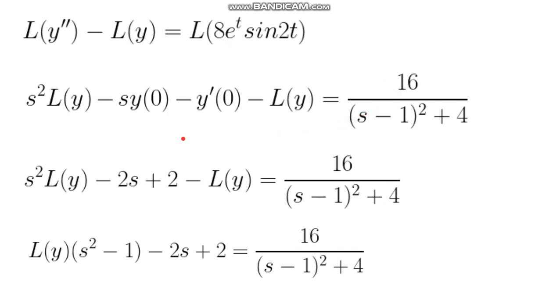Here I just plug in the initial values we were given for y(0) and y prime of 0, which is negative 2. Y of 0 is just 2, and then y prime of 0 is going to be negative 2, and then we have a negative here so it's going to be positive.